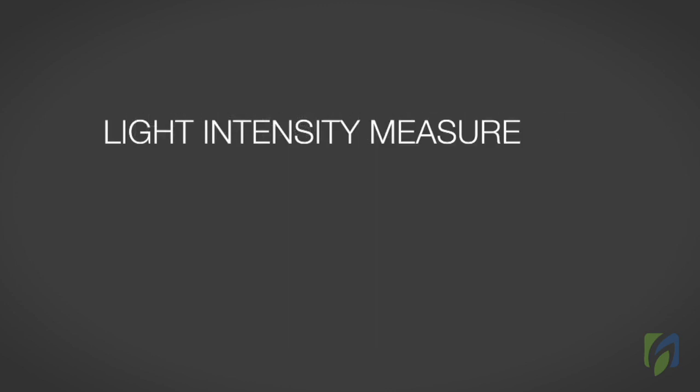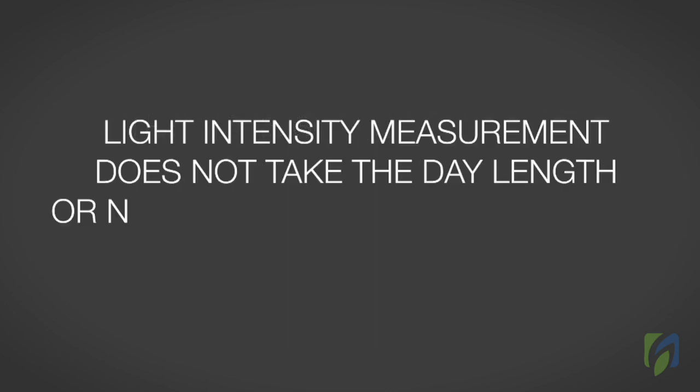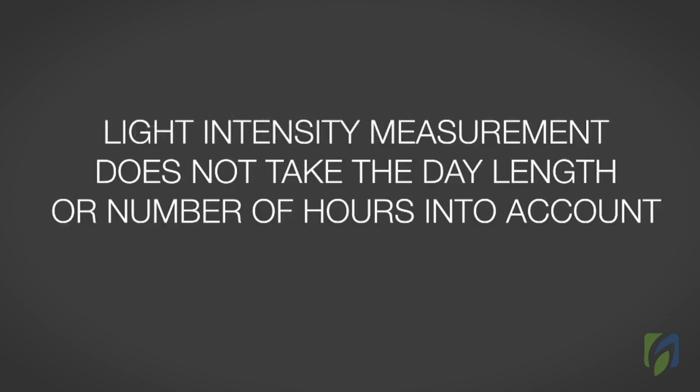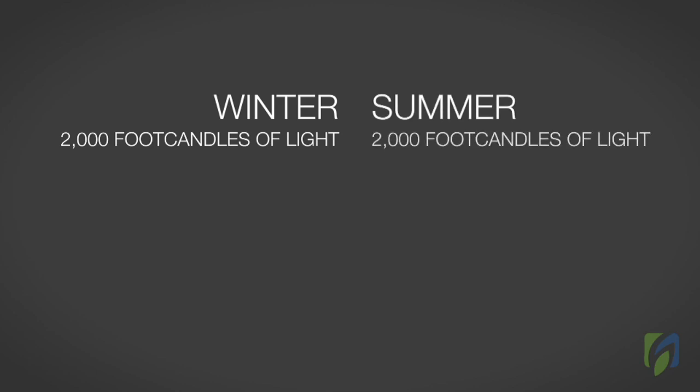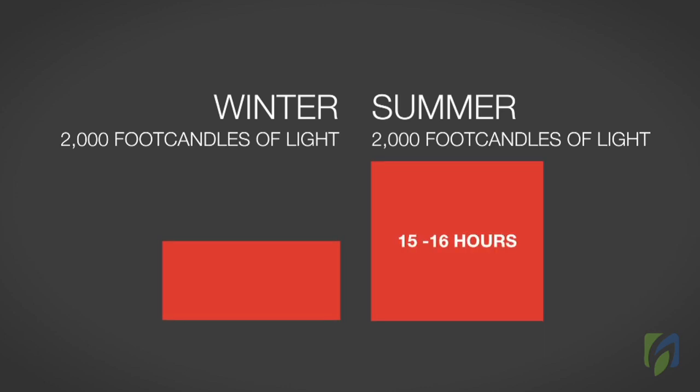A single light intensity measurement does not take the day length or number of hours of sunlight into account. For example, in the northern hemisphere, if a crop receives 2,000 foot candles of light during the winter and 2,000 foot candles of light during the summer, the total amount of light, or DLI, received by the summer crop is considerably higher than the winter crop. The reason is, the summer crop receives 15 to 16 hours of sunlight, while the winter crop receives only 8 to 9 hours.